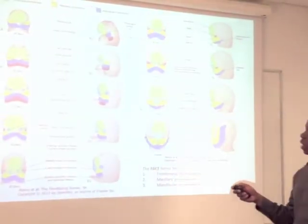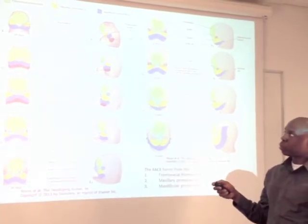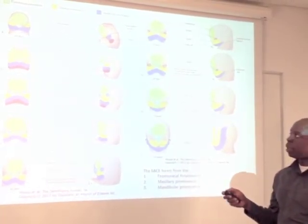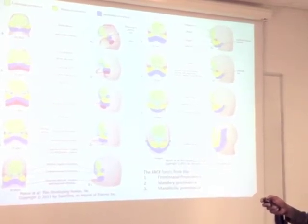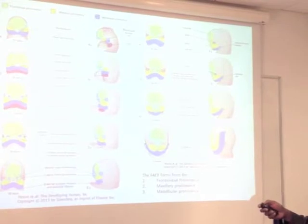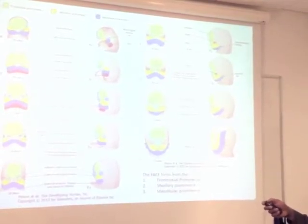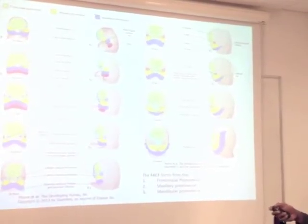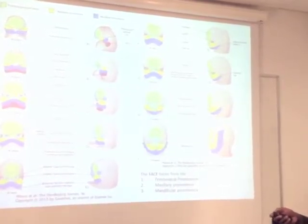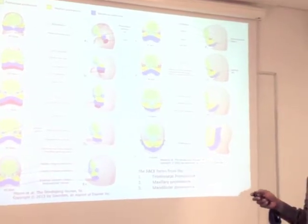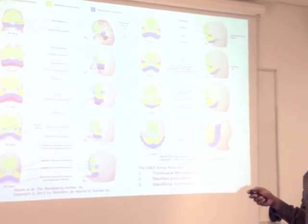So on the face, what we have is a frontonasal prominence, which is there in green. We have this bit here, which is your maxillary prominence, and then we have the mandibular prominence, and underneath that we begin to have here your second pharyngeal arch, and all the other arches coming down from that. Now, let's just follow what happens here.